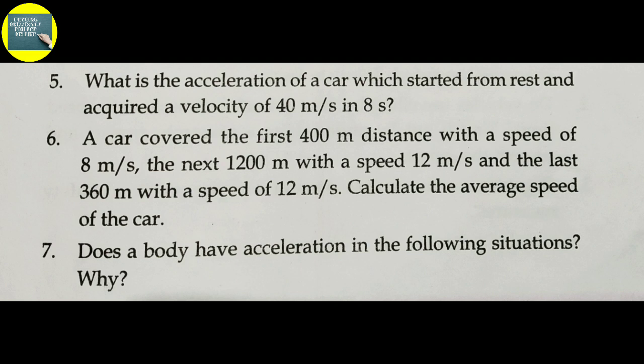Sixth question: A car covered the first 400 meters at a speed of 8 meters per second, the next 1200 meters at 12 meters per second, and the last 360 meters at 12 meters per second. Calculate the average speed of the car. Average speed equals total distance divided by total time taken.